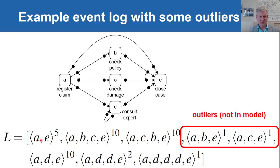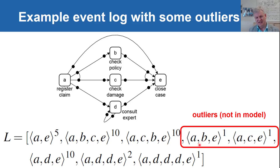Looking at what behavior the C-net allows: we can do A immediately followed by E, or after A choose a binding executing B and C in any order ending with E, or after A select the output binding executing D one or more times before E. The event log I am using deliberately includes a few traces not possible according to this model — specifically two artificial outliers where rather than doing both B and C, we just do B or just do C.